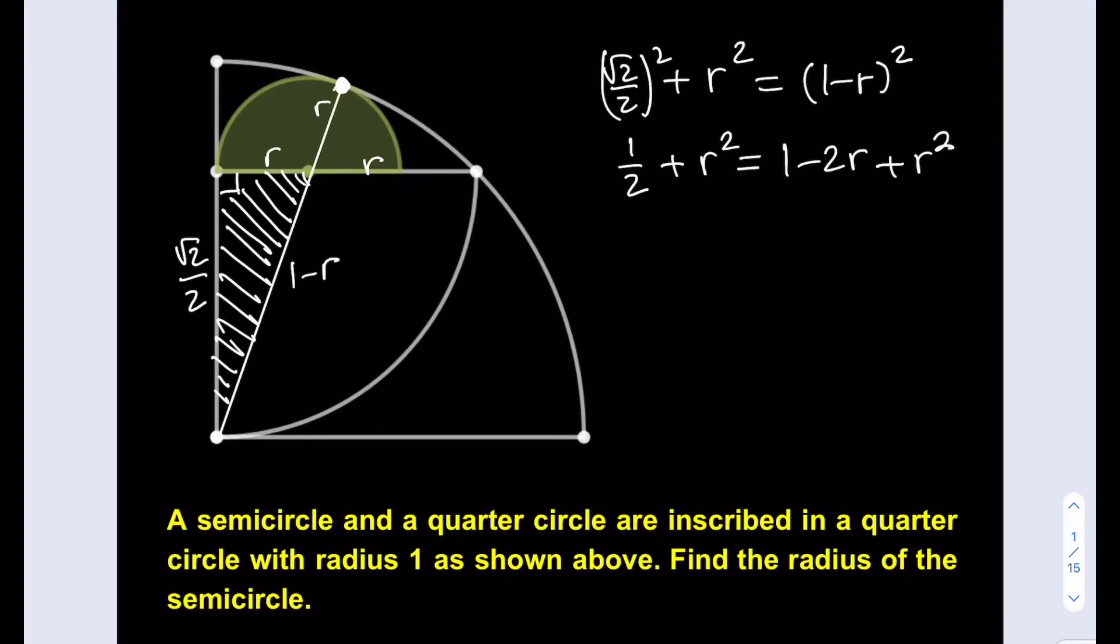Things cancel out really nicely here. r squared cancels out. Then I can bring this negative 2r to the left hand side and subtract the 1 half. That gives me 2r equals 1 minus 1 half, which is 1 half. If I divide both sides by 2, then I get r equals 1 fourth.